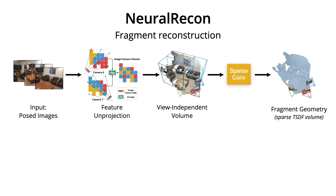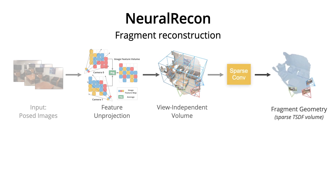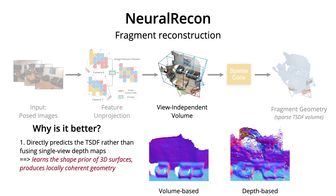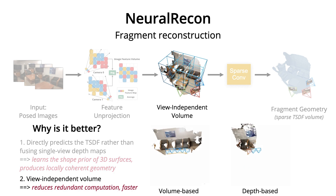This is the pipeline for fragment reconstruction. Keyframe images in the local fragment are first passed through the image backbone to extract multi-level features. These image features are later back-projected along each ray and aggregated into a view-dependent 3D volume. A sparse CNN is used to predict the fragment geometry represented in a sparse TSDF volume. By directly predicting TSDF rather than fusing single-view depth maps, the network learns the shape prior of 3D surfaces and produces locally coherent geometry. The use of a view-independent volume also reduces redundant computation, resulting in faster overall reconstruction speed.